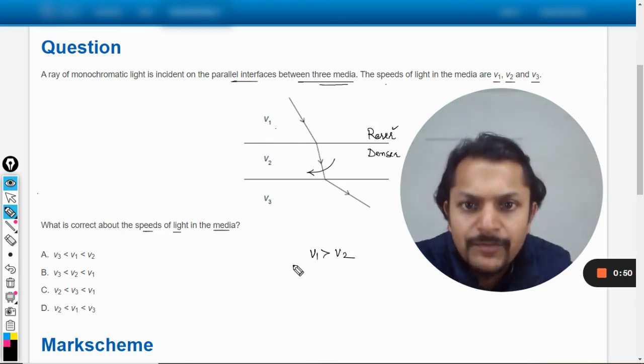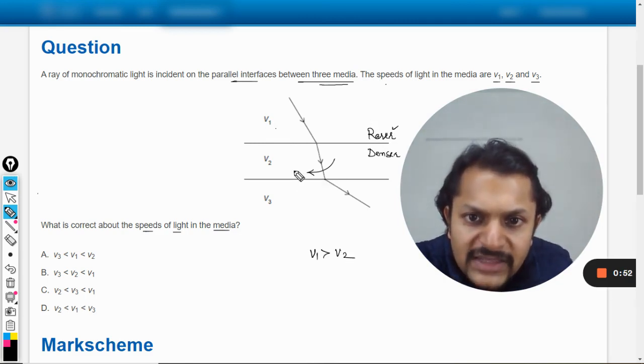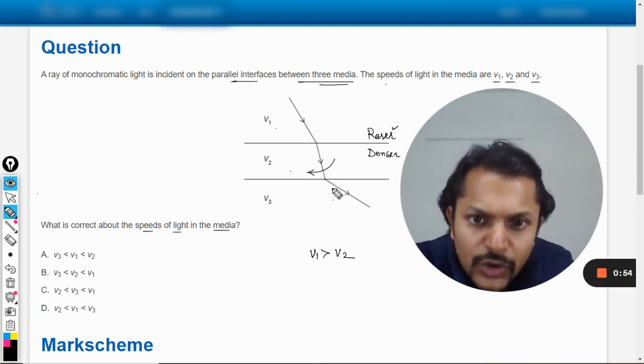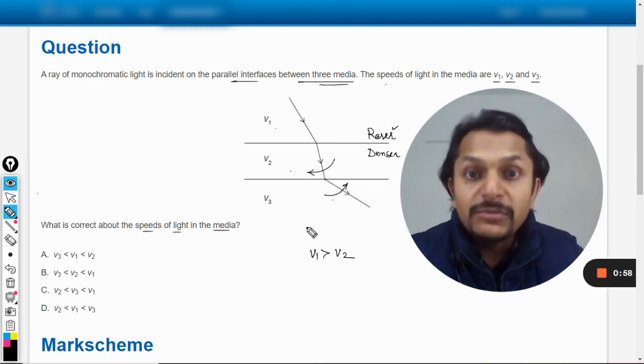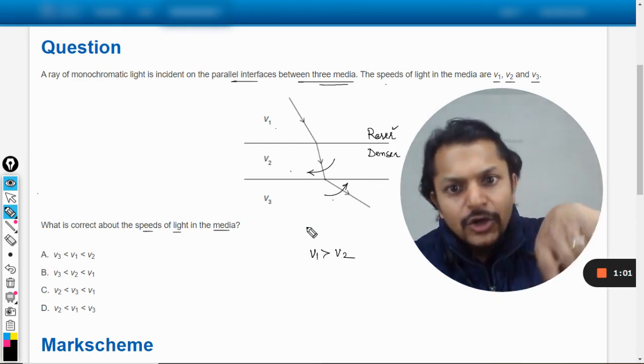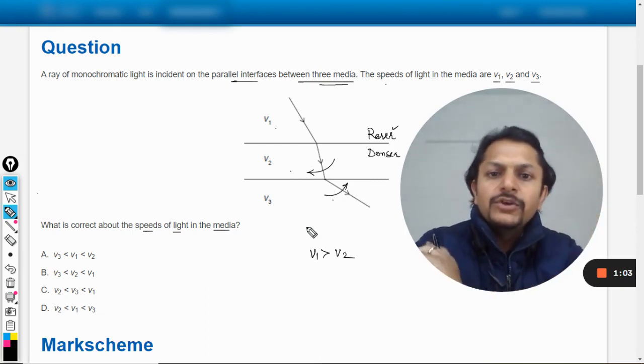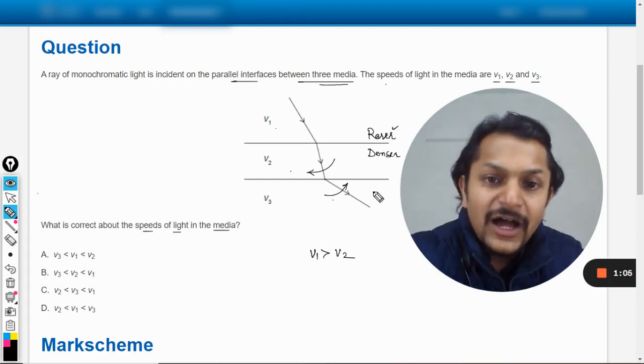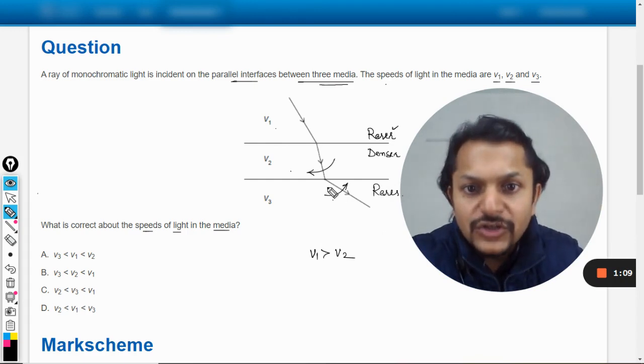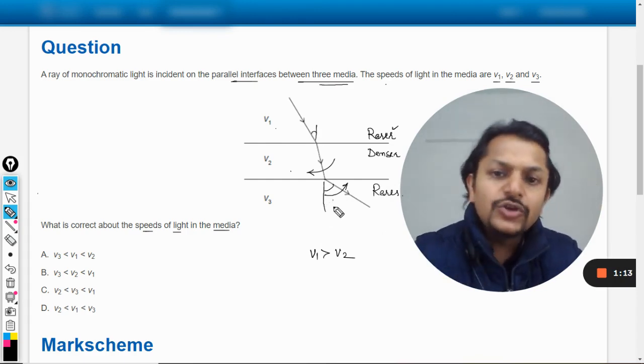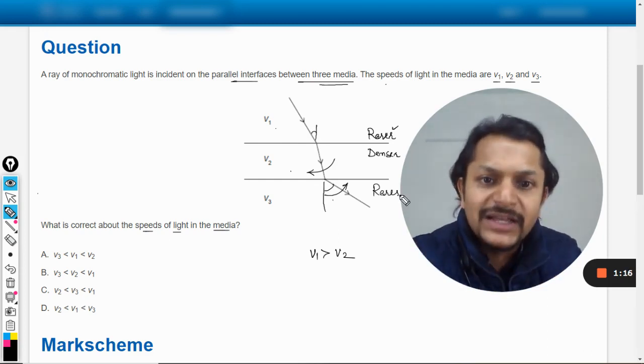When we compare this medium and the third medium, the light is now moving away from the normal when entering the third medium. The ray is deflected away from the normal, which means this is again rarer. You can see that this angle is more than the previous angle - it's even steeper - so I can say that this is the rarest.